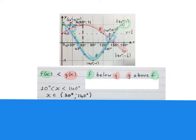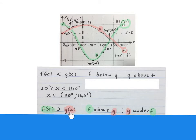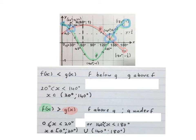The next question asks where is f of x bigger than g of x — where is the green graph bigger than the red graph, where f is above g. That gives those two blue pieces. So x is bigger than or equal to 0 and x is smaller than 20 degrees, or x is bigger than 140 degrees and x is smaller than 180 degrees. You may also write it in interval notation.